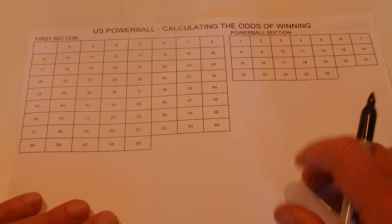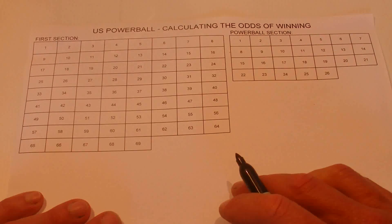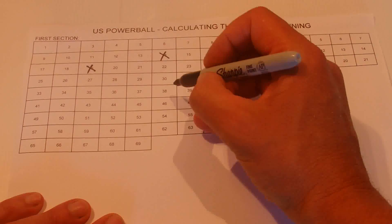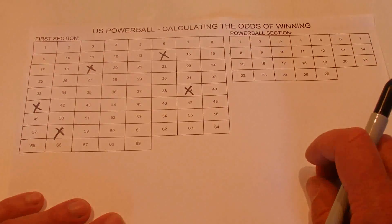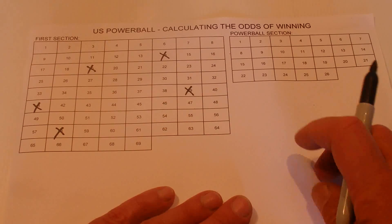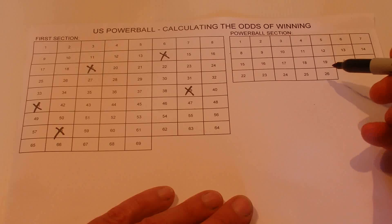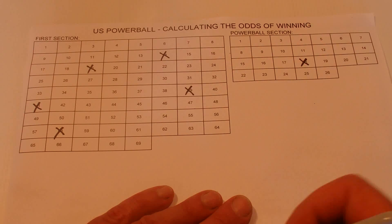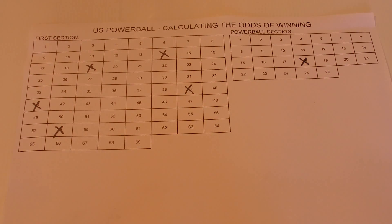Basically, what you've got to do to win it: you've got to select five numbers from 69 in the first section. I'm just going to randomly select five numbers on my grid here — I've got 69 numbers on this grid. Then on the Powerball section, you've got to correctly select one number out of 26.